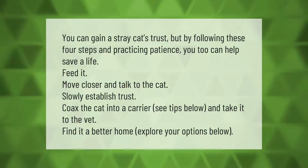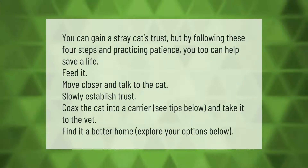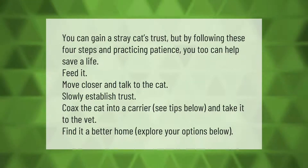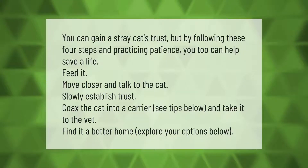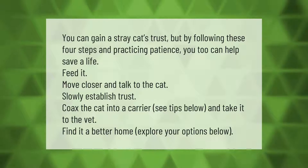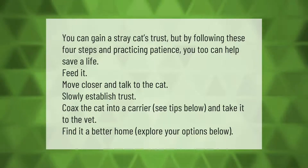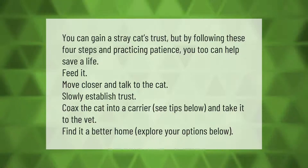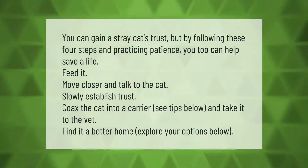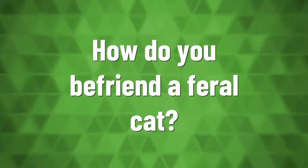You can gain a stray cat's trust by following these four steps and practicing patience. Feed it, move closer and talk to the cat slowly, establish trust, coax the cat into a carrier, and take it to the vet. Find it a better home and explore your options.